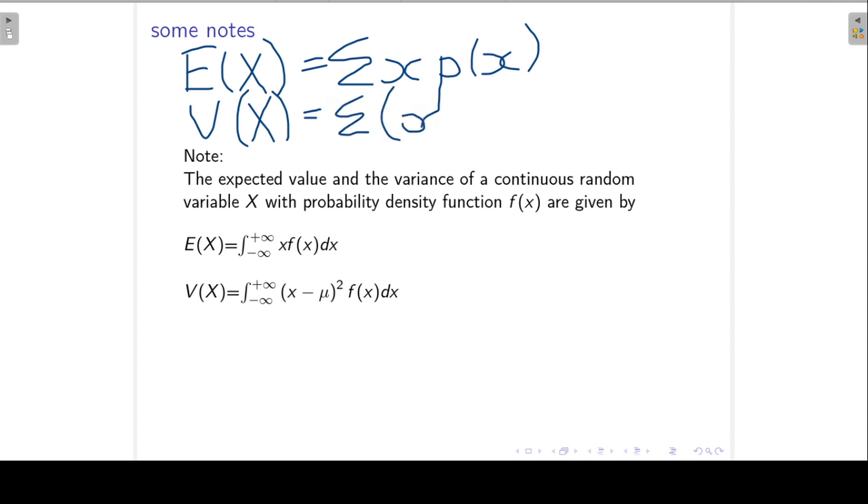For a continuous random variable x with a density function f of x, the expected value of x is the integral of x times the density function. And the variance is the integral of the square of x minus the mean times the density function. So we substitute the summation in the discrete probability distribution with integrals. But we are not going to go into any further detail at this stage.